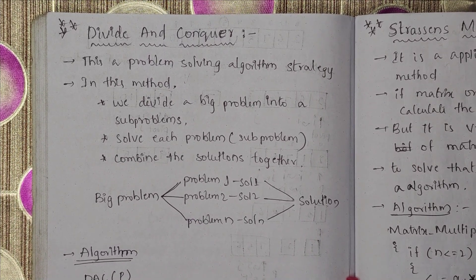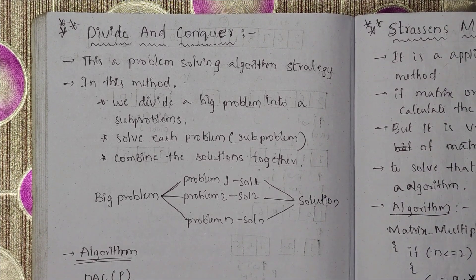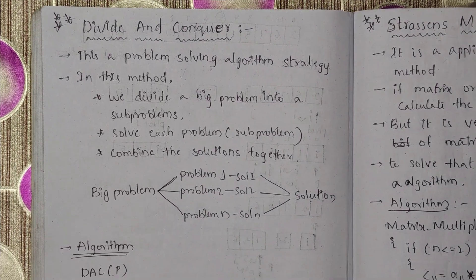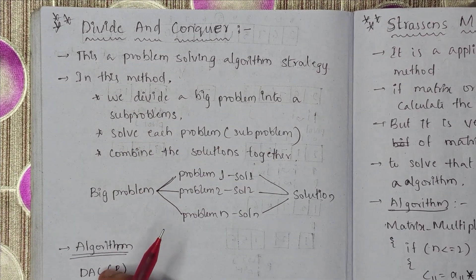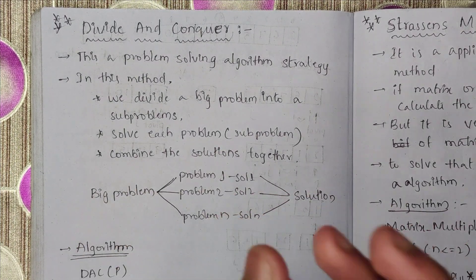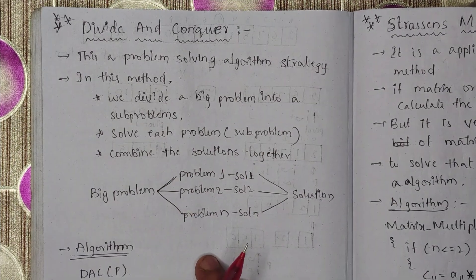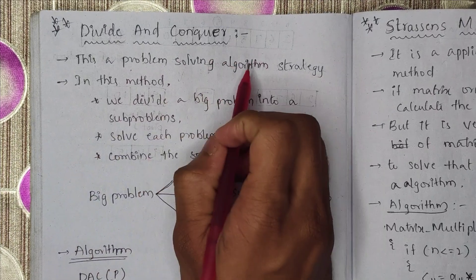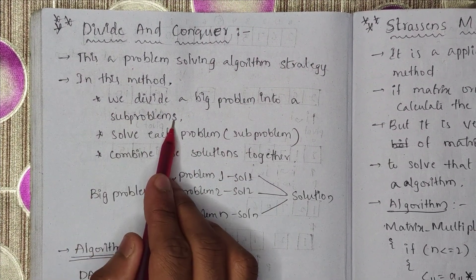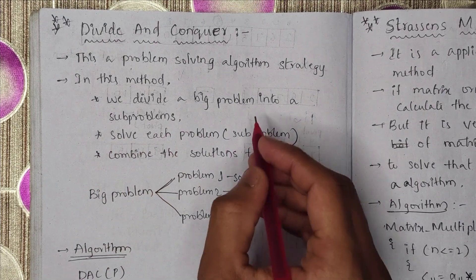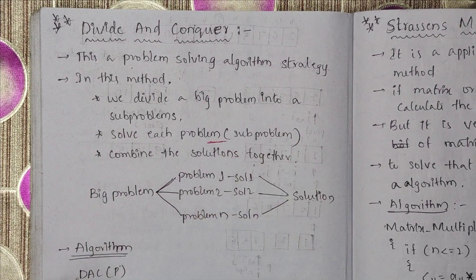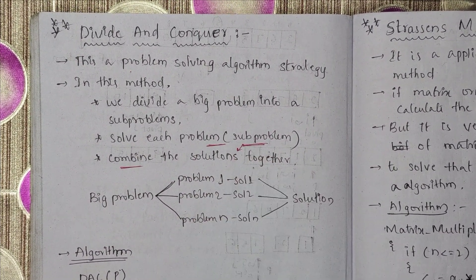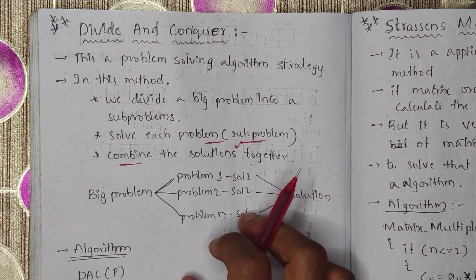What is the divide and conquer method, and what are its applications? The divide and conquer method is a problem-solving algorithm strategy. In this method we divide a big problem into sub-problems, solve each problem individually, and at last we combine all the sub-problem solutions together to form a single solution.